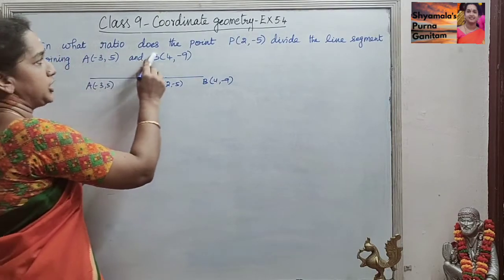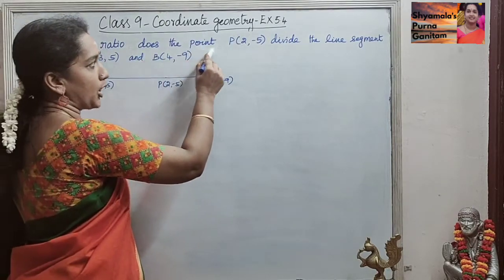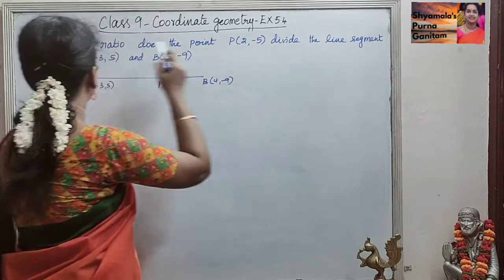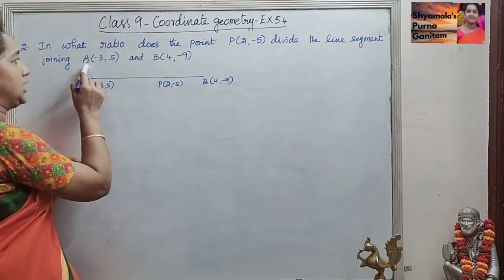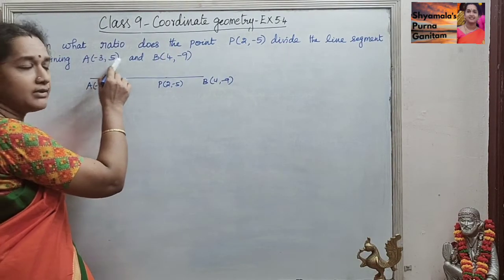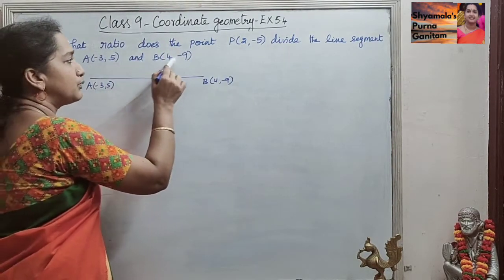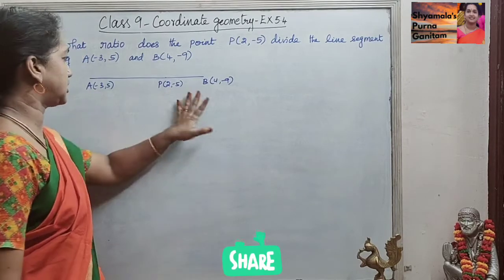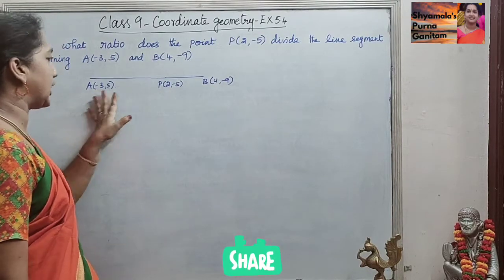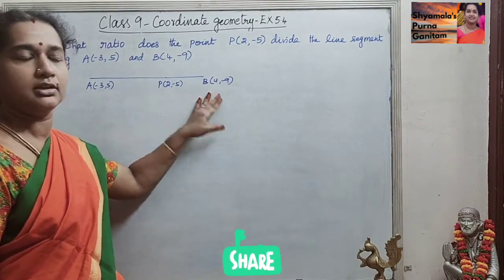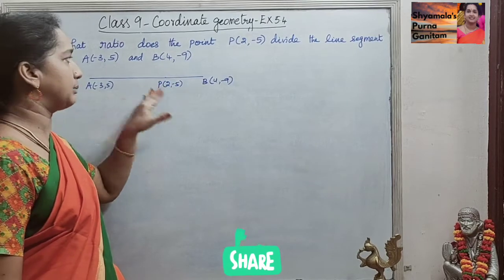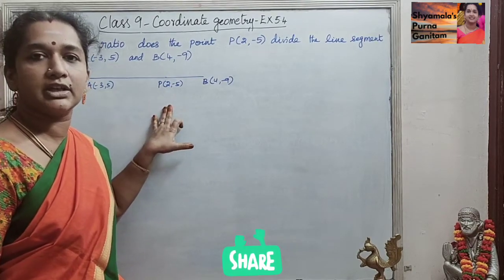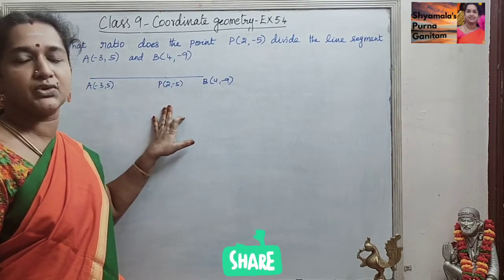In what ratio does the point P(2, -5) divide the line segment joining A(-3, 5) and B(4, -9)? So this is the question given. The A and B coordinate points are given, and somewhere a point P with coordinate (2, -5) is there.